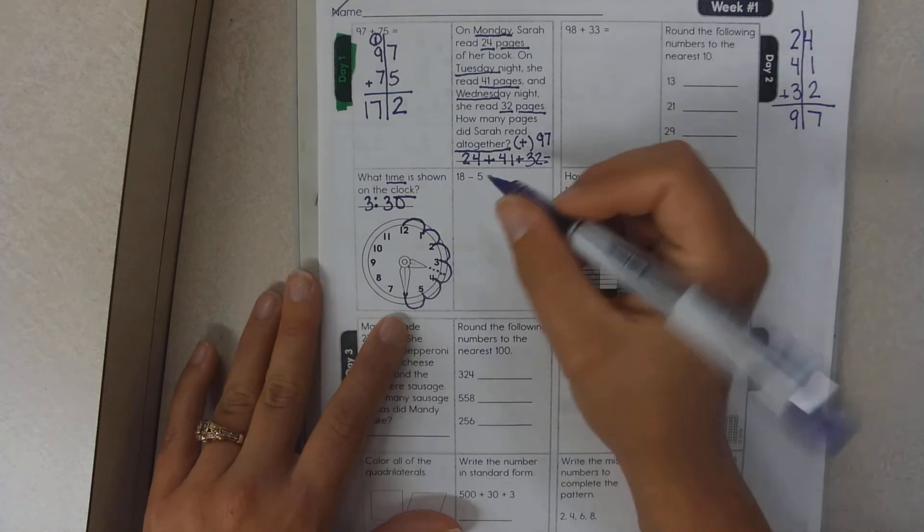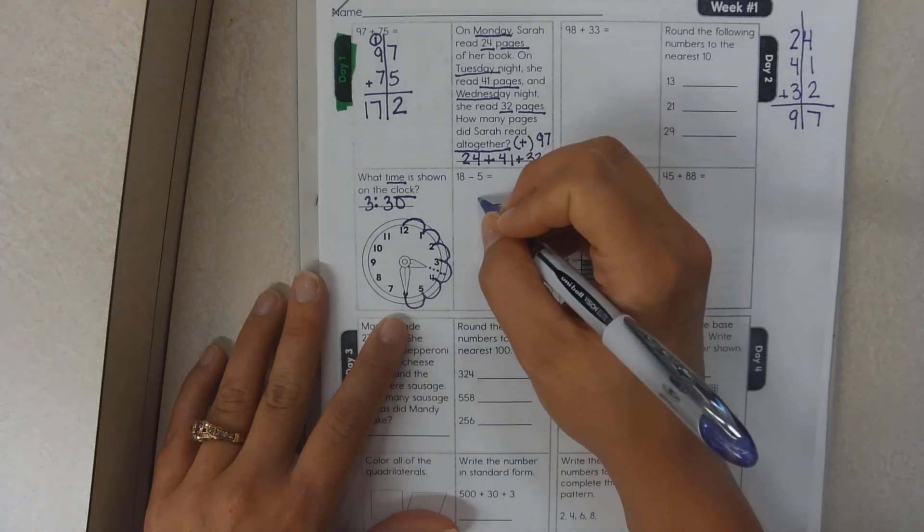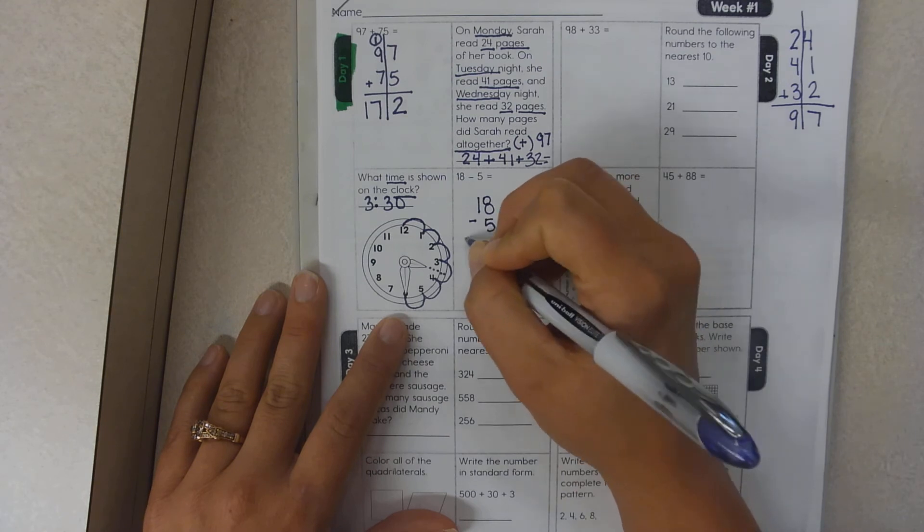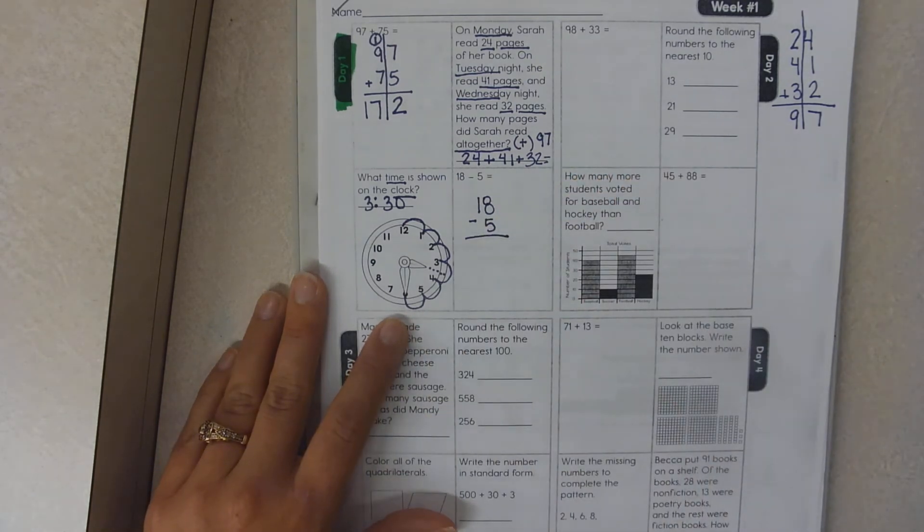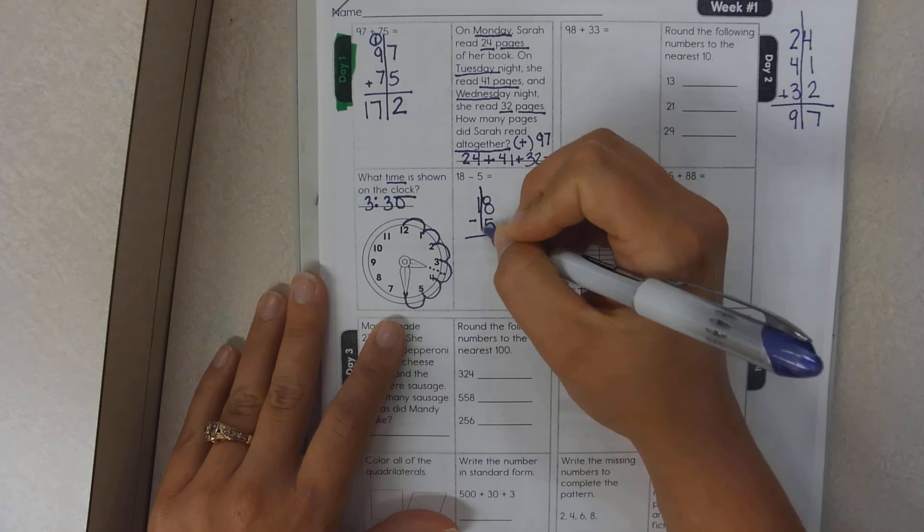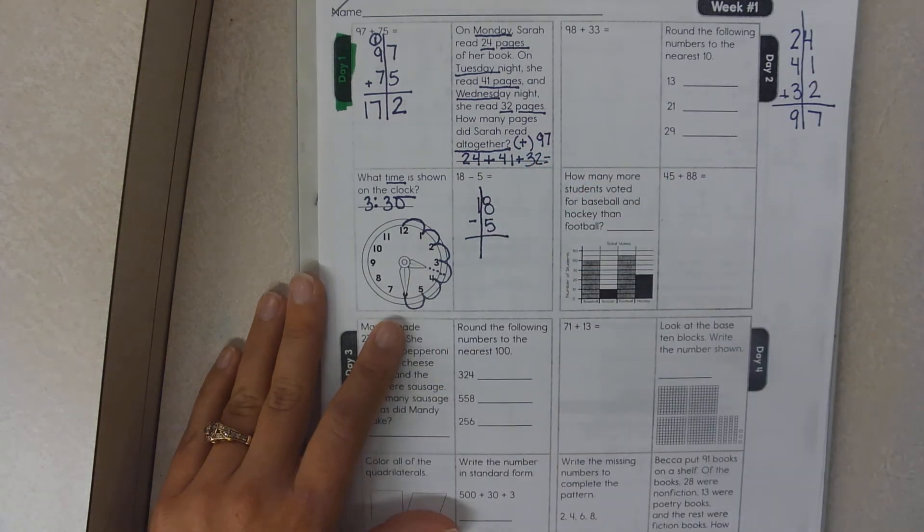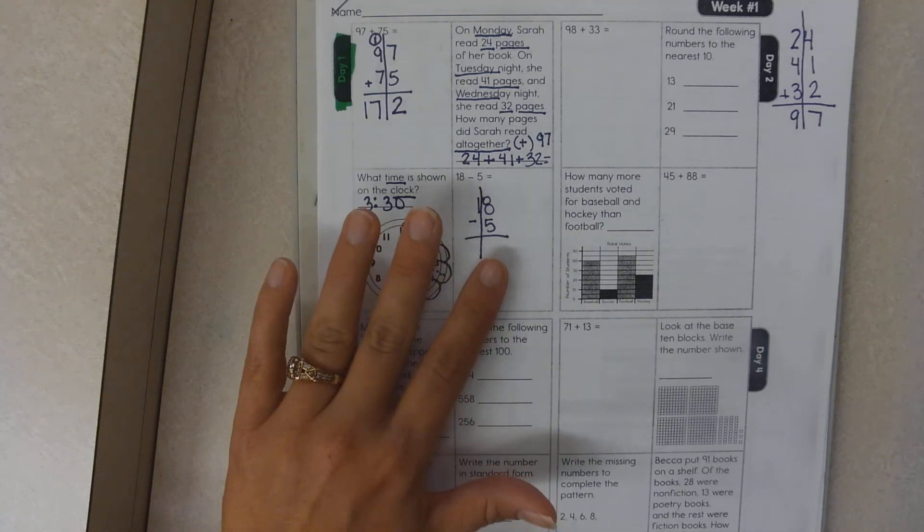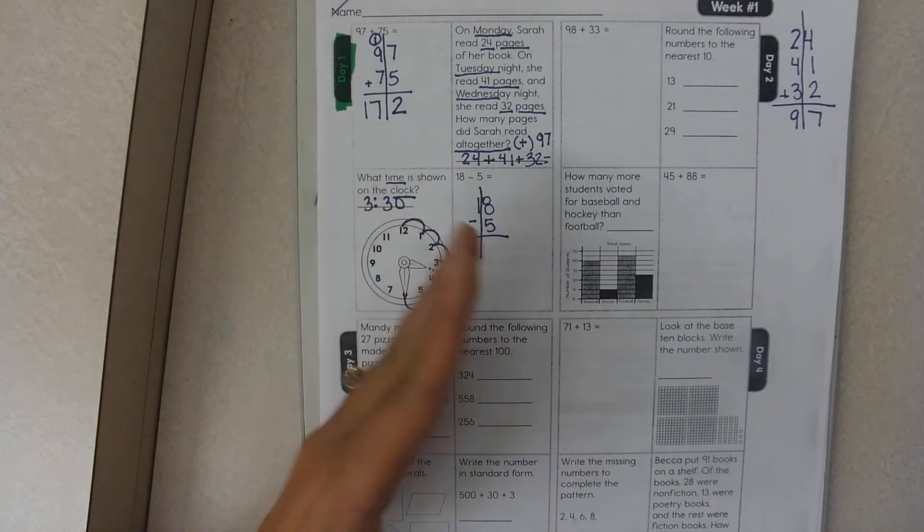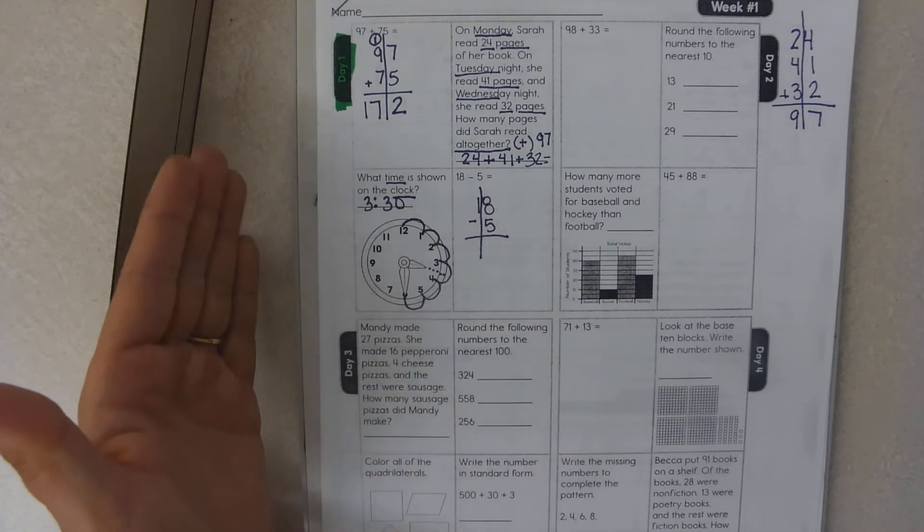The final question for today is 18 minus 5. Once again, I know that some can do this mentally. Please do not mentally subtract right now. Go ahead and separate your ones and your tens. And you should always start on the right side. So you read from left to right, you do math from right to left.